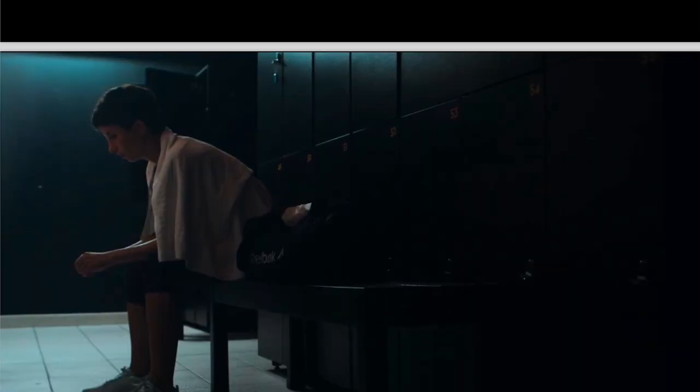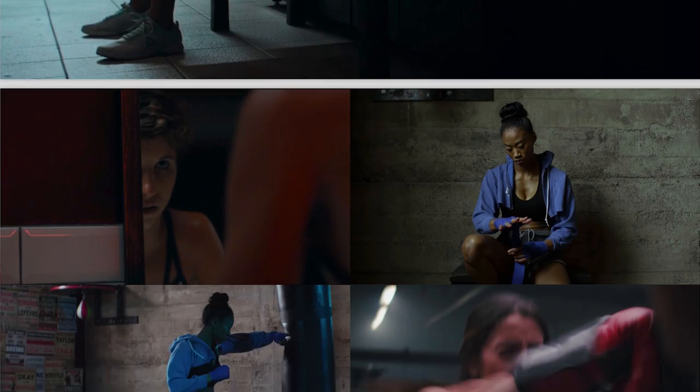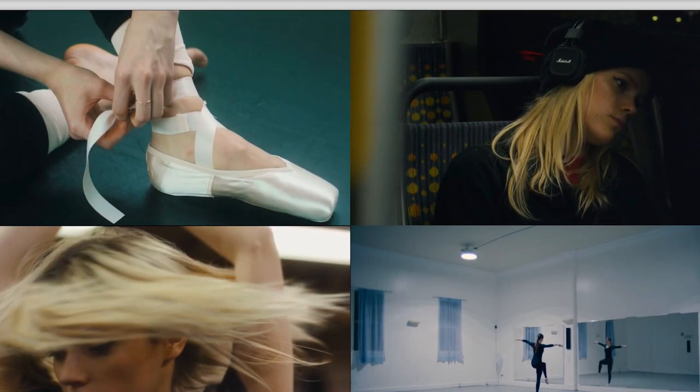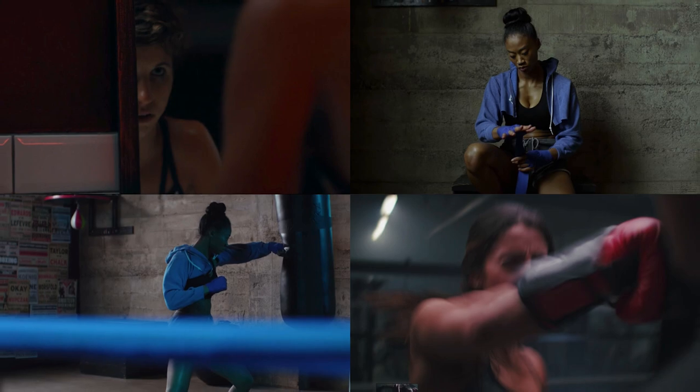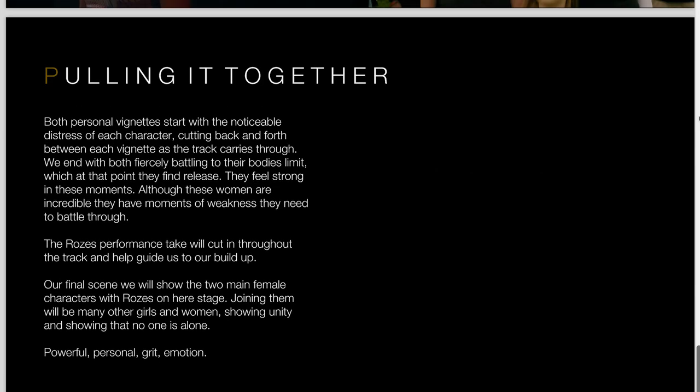One vignette would be the boxer, the second the dancer, the third the performance takes of the musician singing, and the final vignette would be all the women coming together on stage, standing powerfully together. For each vignette I take those screen grabs and all the visual inspiration pulled from the internet, and place them in an organized manner under each vignette showing how I envision it looking. Then once all the vignettes and their looks are in place, I have a final slide that pulls it all together and gives a brief overview of what the music video will look like.